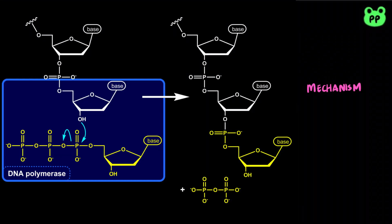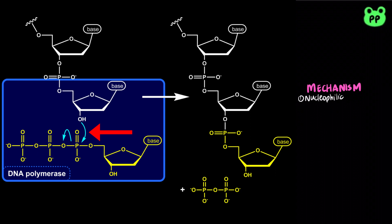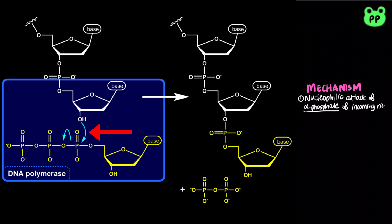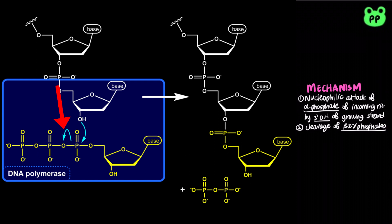Its mechanism involves nucleophilic attack of the alpha phosphate of an incoming nucleotide triphosphate by the 3 prime hydroxyl group of the growing strand, followed by the cleavage of beta and gamma phosphates from the incoming nucleotide.